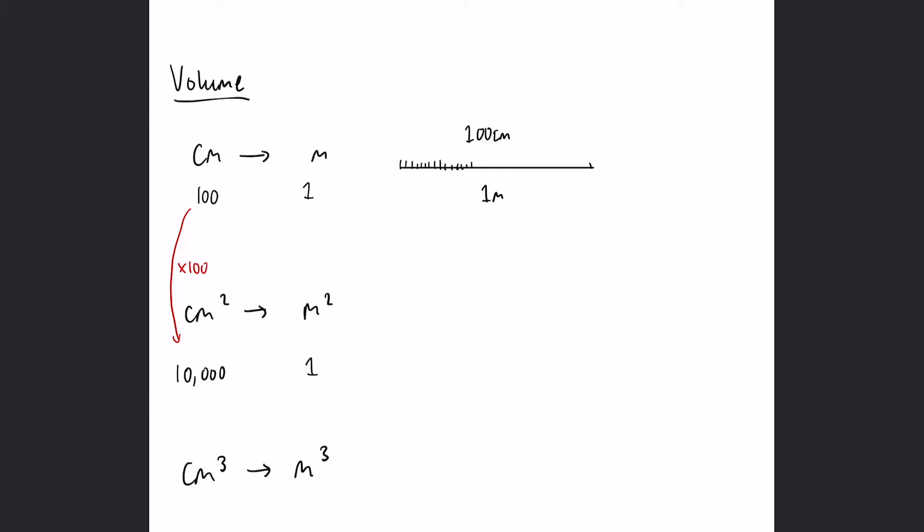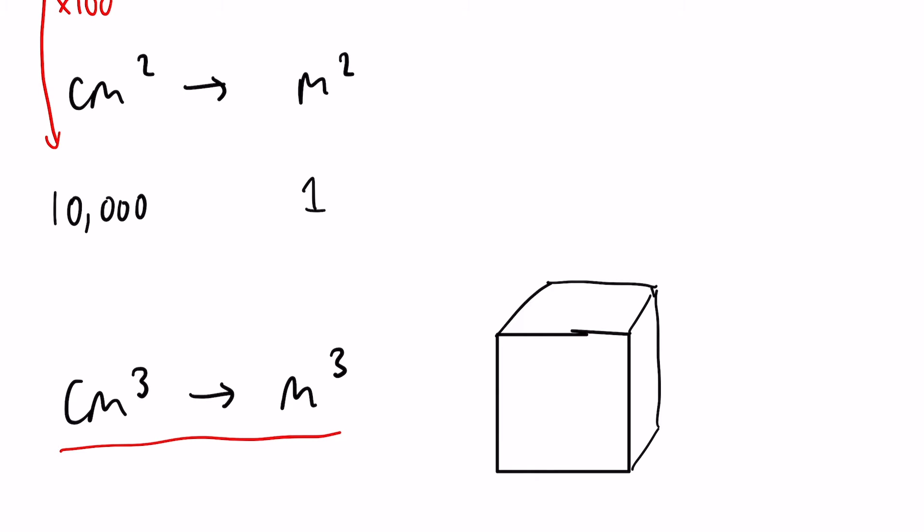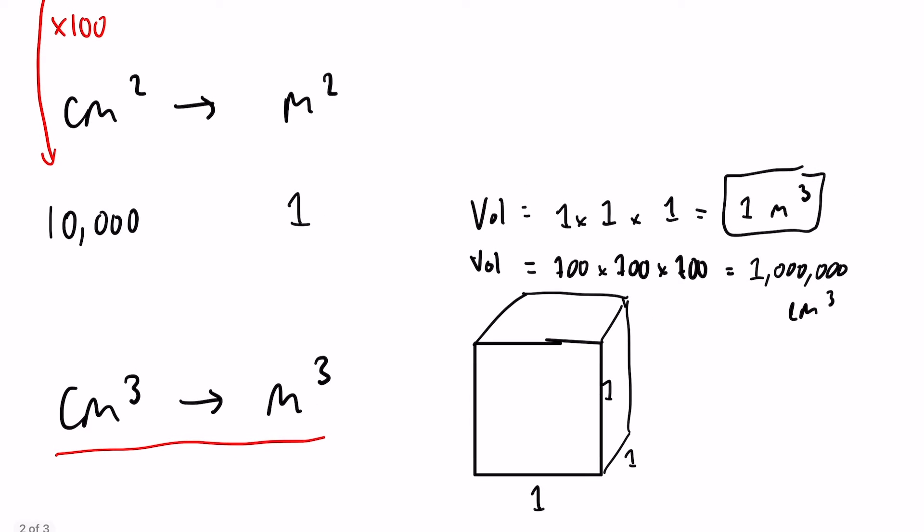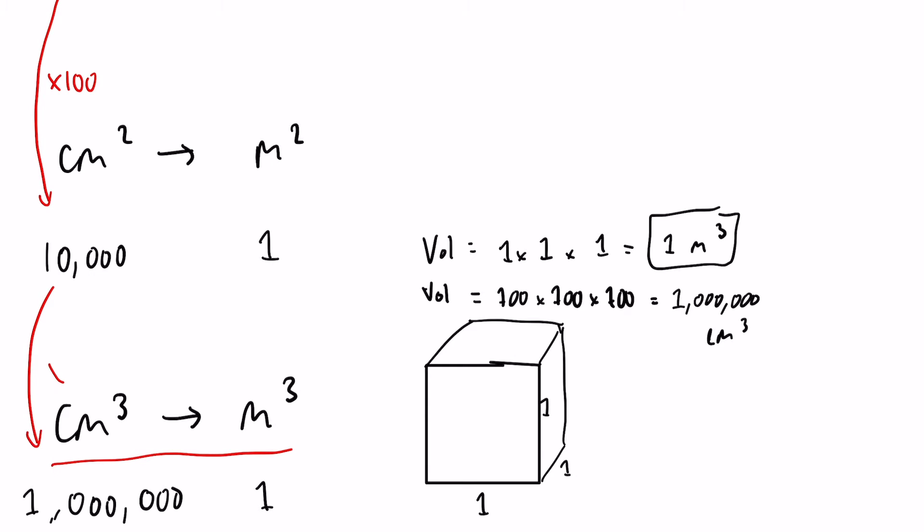Centimeters cubed to meters cubed: not a line, not a square, this time we'll use an actual cube. Take a look at this cube. If it's in meters, it's a one by one by one meter cube, which makes one meter cubed. But if you're working out the volume in centimeters, those ones are now going to become one hundreds, and that is going to give you one million centimeters cubed. Again, you can see we've times that by 100 again.